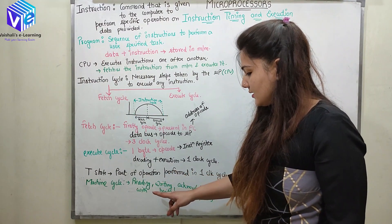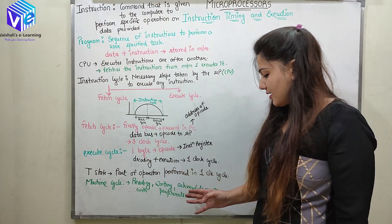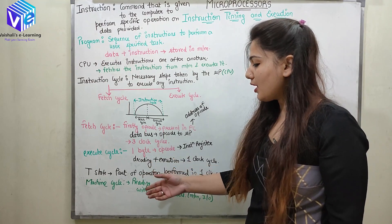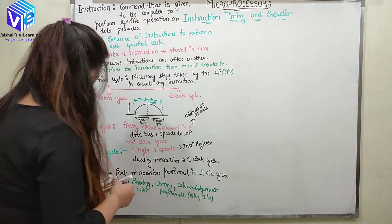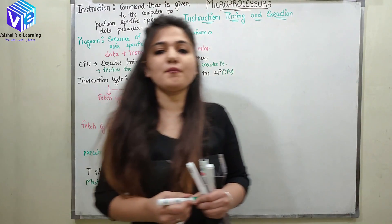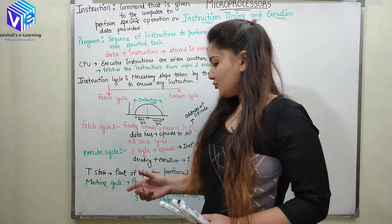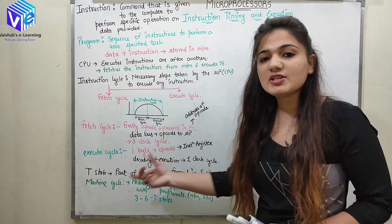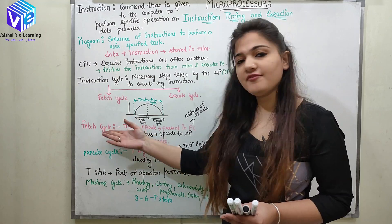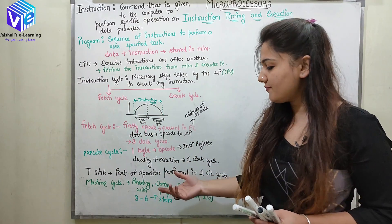A machine cycle consists of operations like reading, writing, or acknowledgement with peripherals such as memory and input/output devices. A machine cycle consists of 3 to 6 T states. Operations like opcode read, memory read, and memory write are each a machine cycle. Combining all machine cycles — the fetch cycle and execute cycle — gives us the instruction cycle.